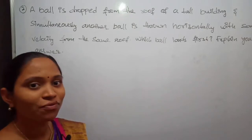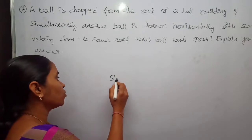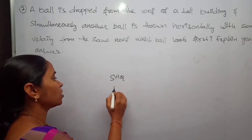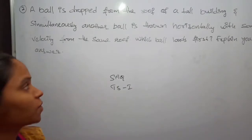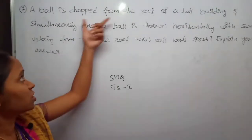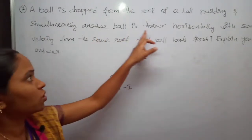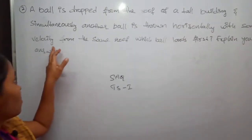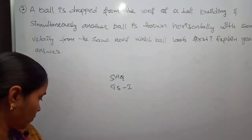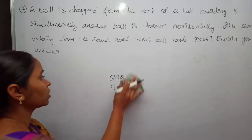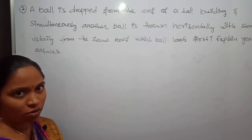Hello students, welcome to Swapna Physics Classes. In this lecture I am going to explain one more important short answer question for your TS Intermediate First Year examination. The question is: a ball is dropped from the roof of a tall building, and simultaneously another ball is thrown horizontally with some velocity from the same roof. Which ball lands first? We have to calculate the time taken by both balls to reach the ground.